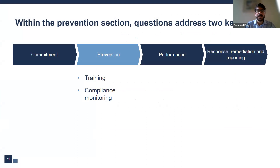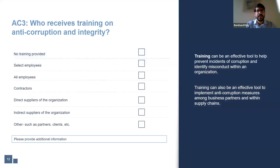In the prevention subsection, questions address two main topics: training and compliance monitoring — namely, what is the company doing to prevent and ensure corruption isn't happening? AC-3 aims to capture who in your organization receives training on anti-corruption and integrity, including employees and suppliers linked to your organization. Training can be a critical component of preventing and identifying instances of anti-corruption across a company's value chain, and should be tailored to specific stakeholders. Companies that select 'other' should provide additional information in the space provided.